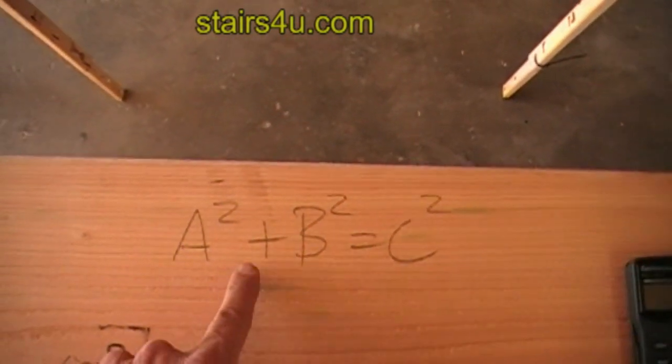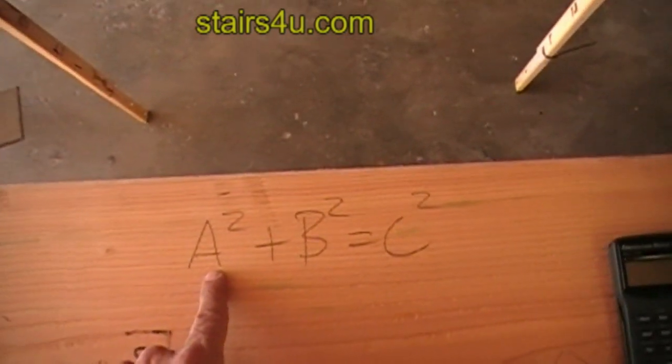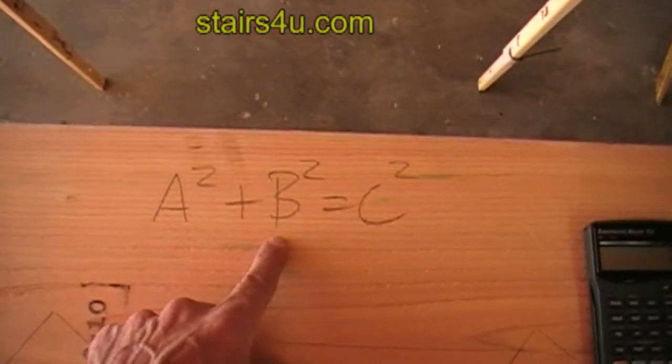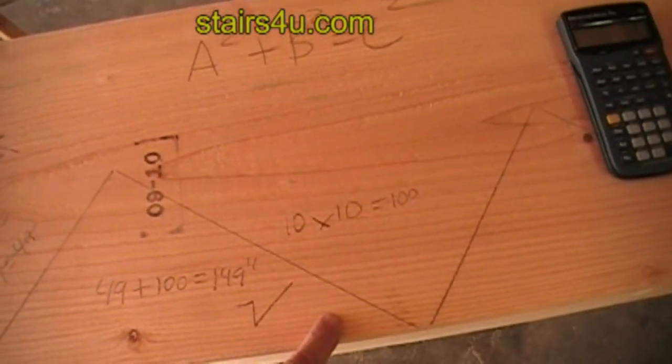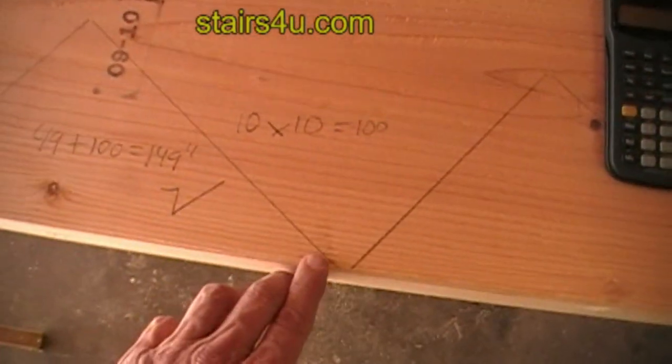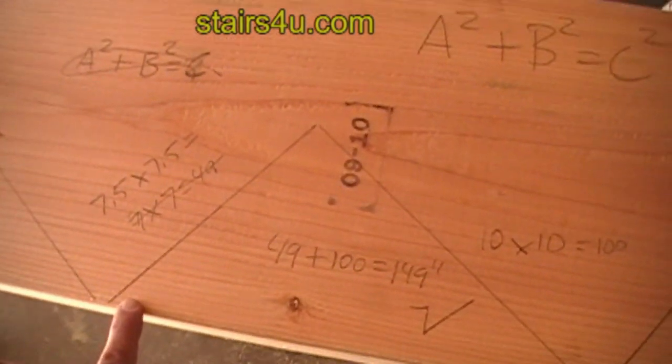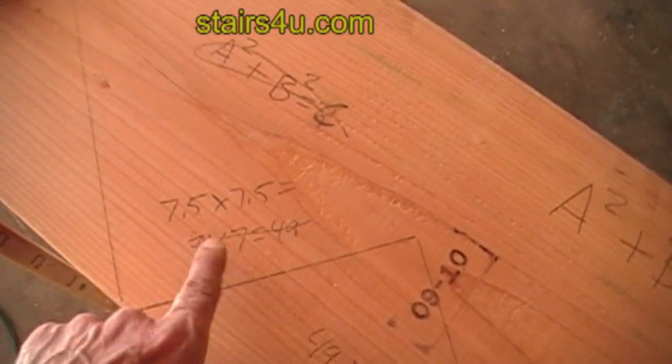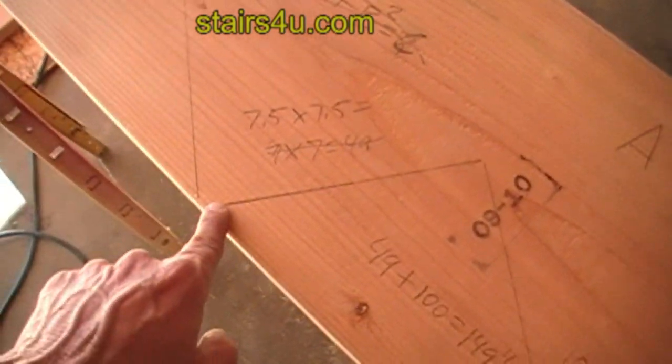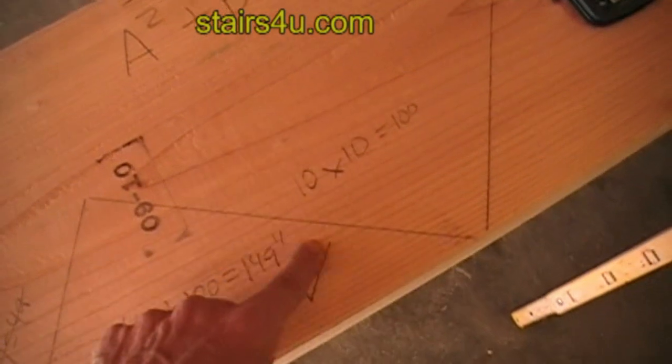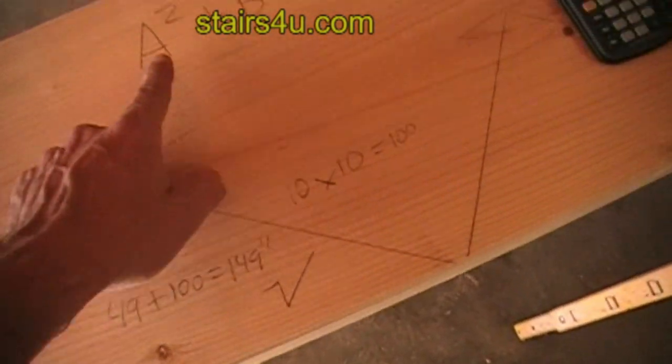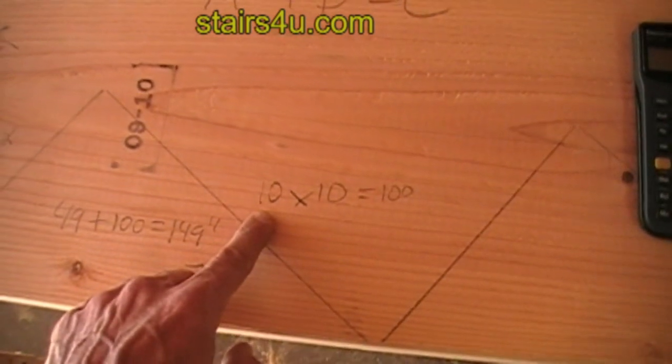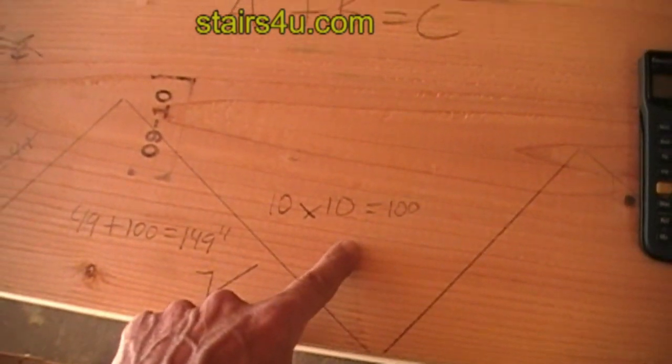This is one side of the triangle right here. We'll use this as our riser 'a', 'b' is going to be the tread, and 'c' is going to be the hypotenuse. We have 7.5 inches for a seven and a half inch rise, and we have a 10-inch tread. To square a number, we just multiply it by itself: 10 × 10 = 100, 7 × 7 = 49, 12 × 12 = 144.